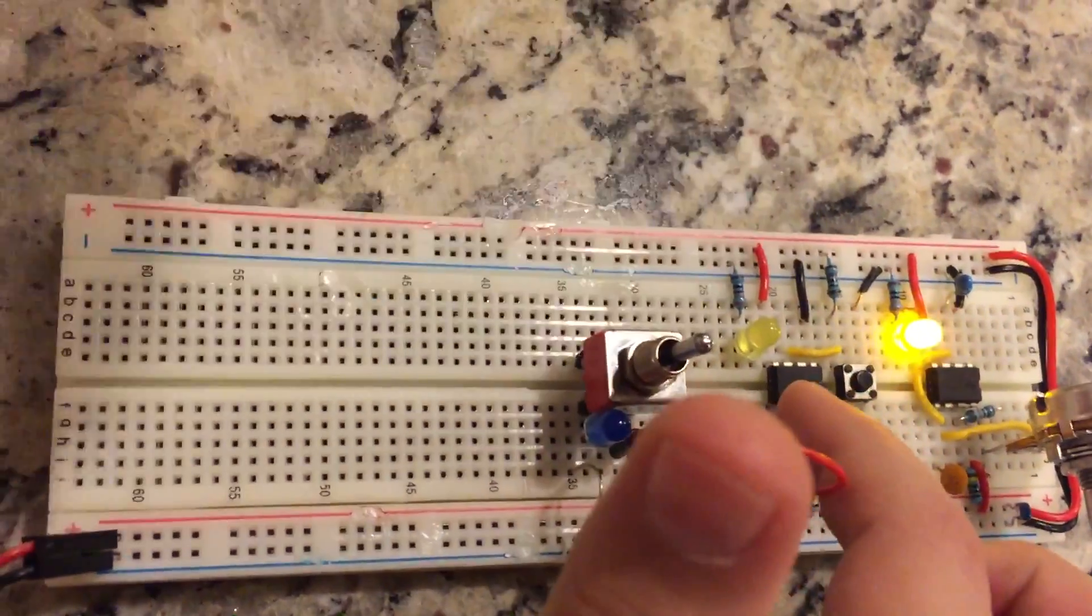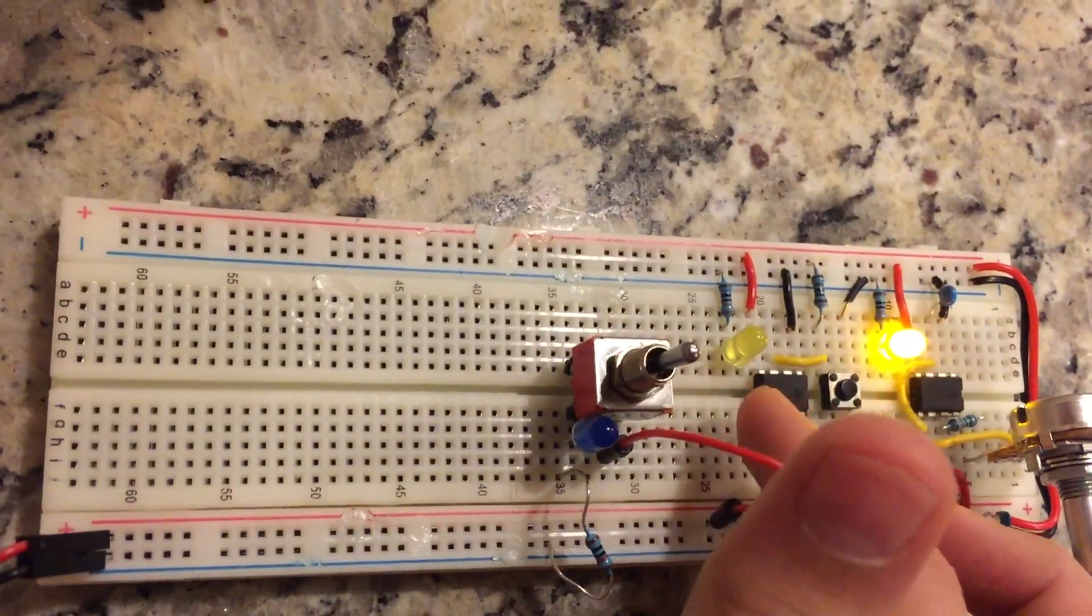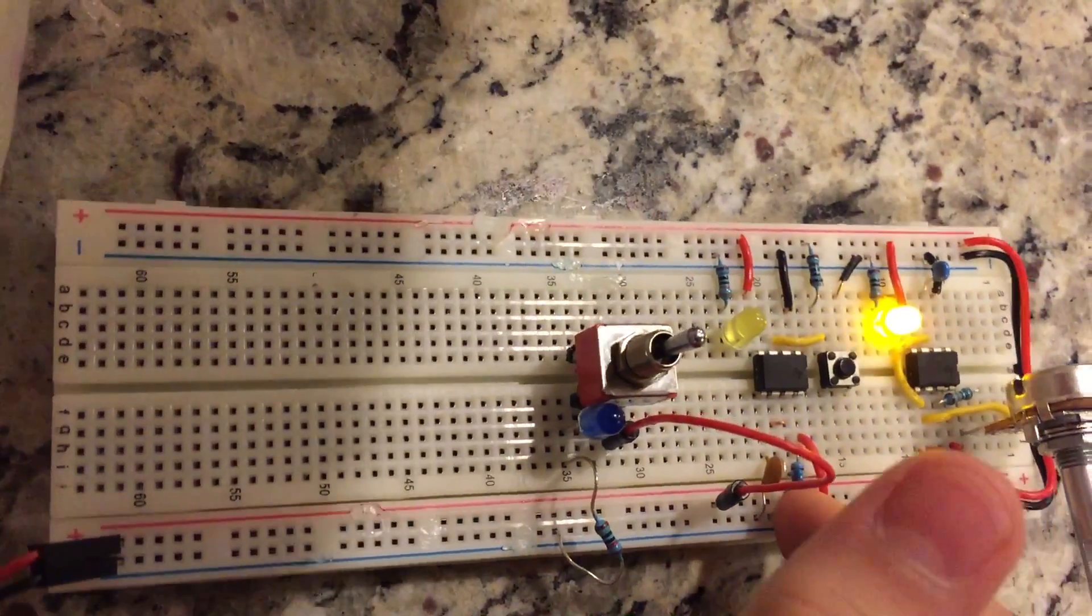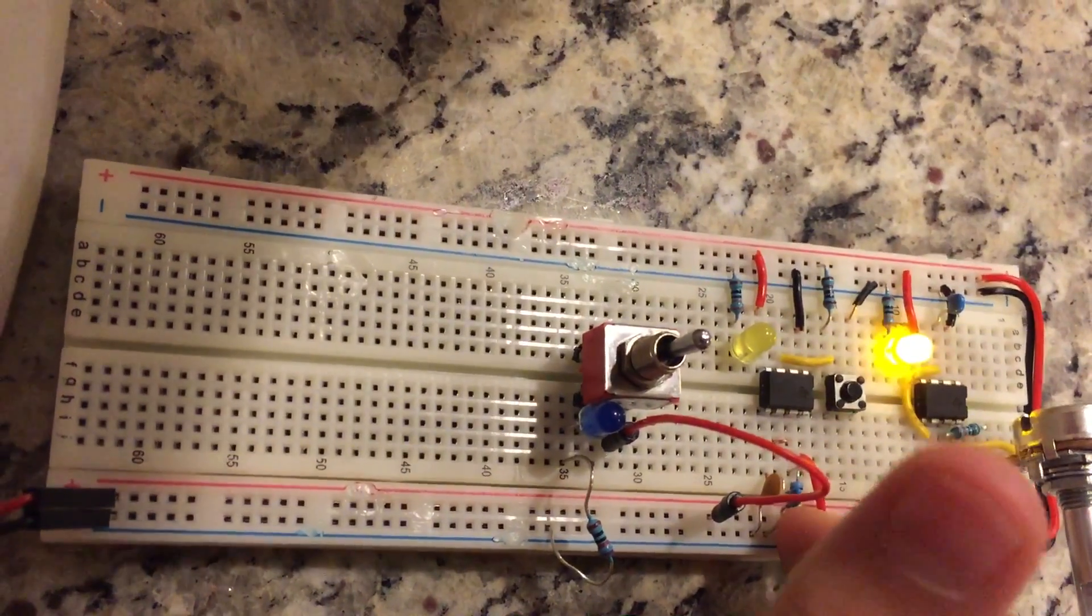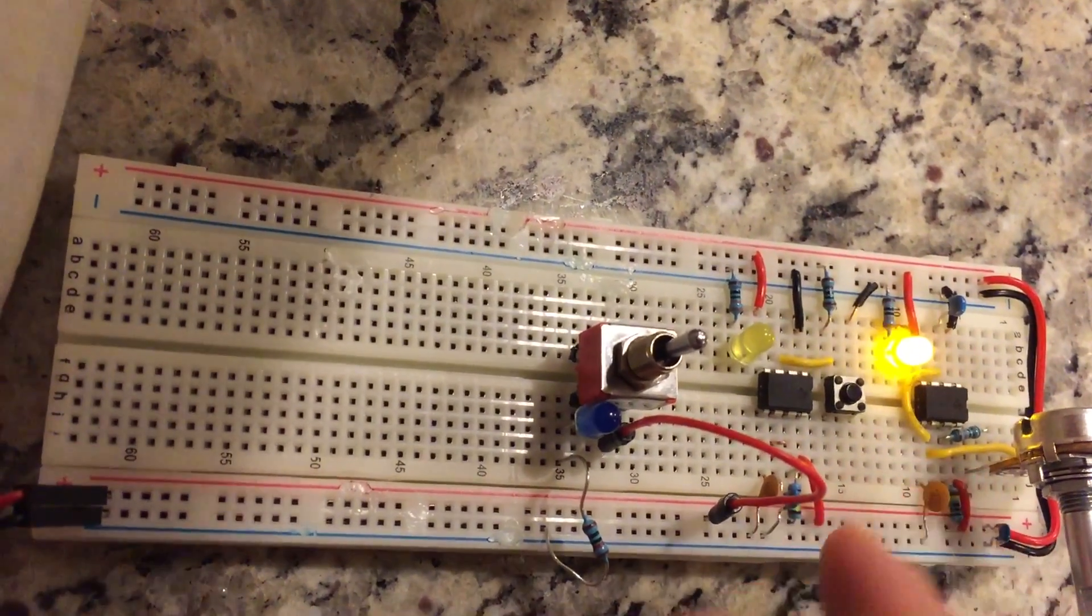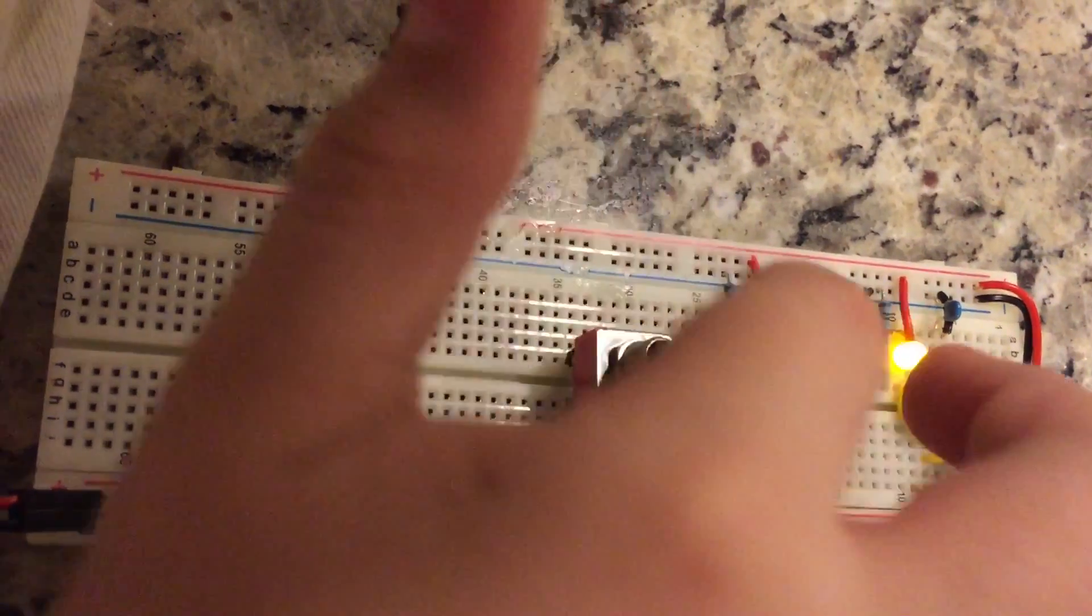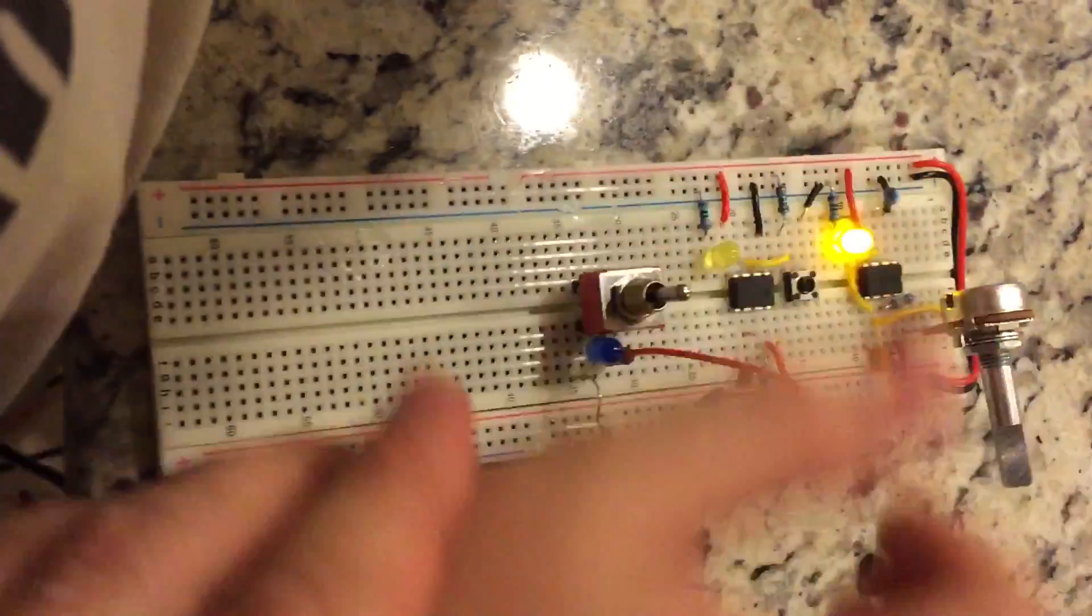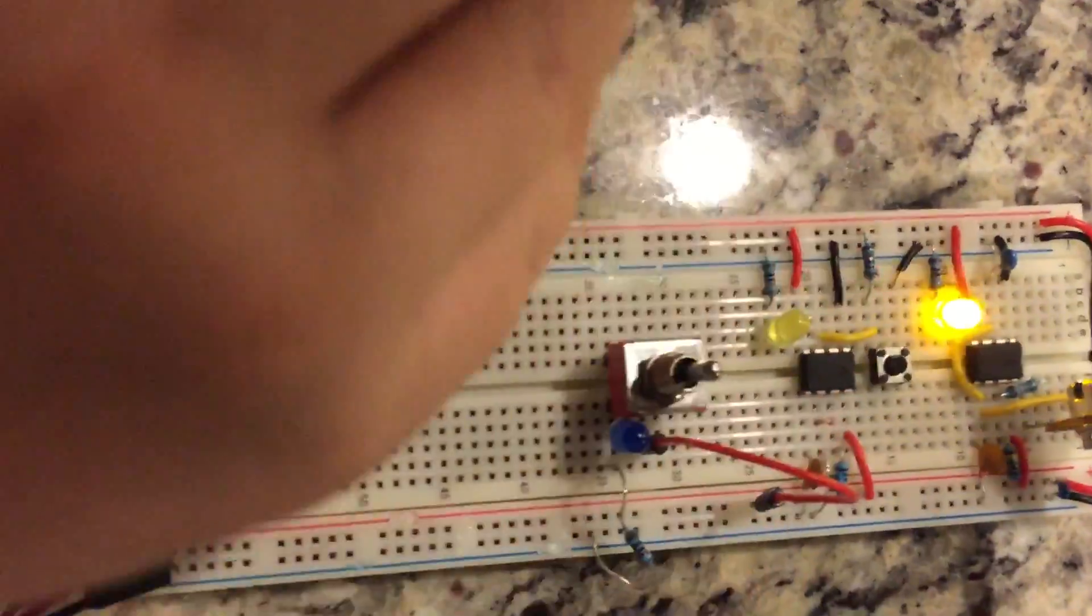So what this does, we use a 555 timer chip and a 1 megaohm resistor, two capacitors, a light, a push button, and some more resistors.